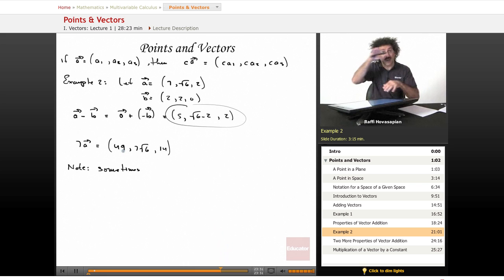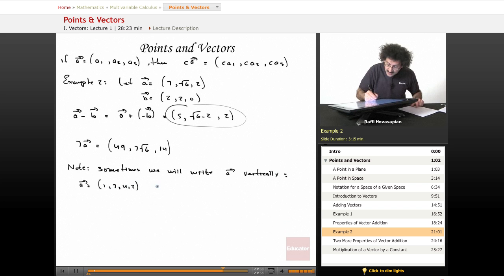So sometimes we will write the vector A vertically. In other words, if I had the vector A, which is, let's say, a 4 vector, 1, 7, 4, 2, a point in 4 space, that is going to be equivalent to 1, 7, 4, 2.